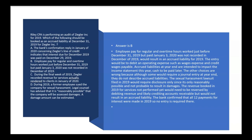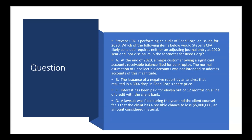So we know the answer is B. What we do at I-75 is always anticipate the next question based on the one we just did. Let's try this one: Stevens CPA is performing an audit of Read Corp., an issuer, for 2020. Which of the following items would Stevens CPA likely conclude requires neither an adjusting journal entry at 2020 nor disclosure in the footnotes? So we're looking for something that's not an accrued liability and does not even have to be disclosed in the footnotes.